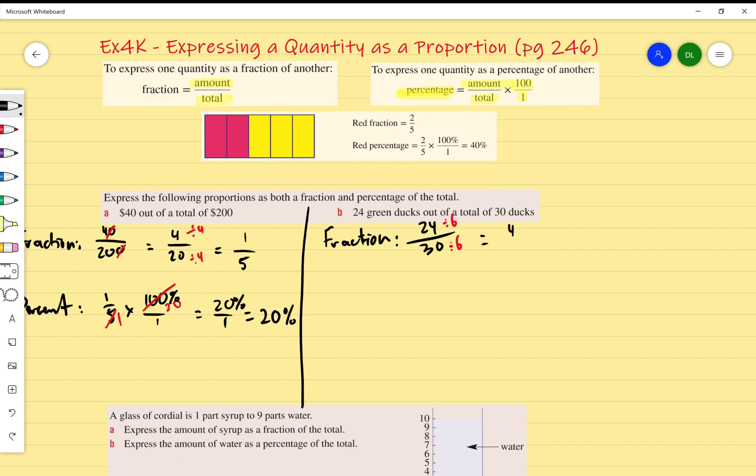Now the percentage: all we do is multiply that. So 4 over 5, multiply that by 100 over 1. I can simplify it first. Divide that by 5 gives me 1, divide that by 5 gives me 20, and I end up with 4 times 20 over 1 times 1 percent, or 80%.